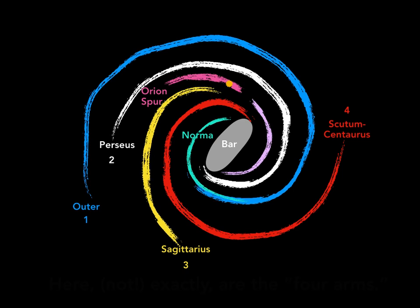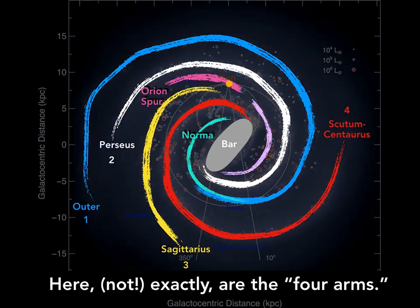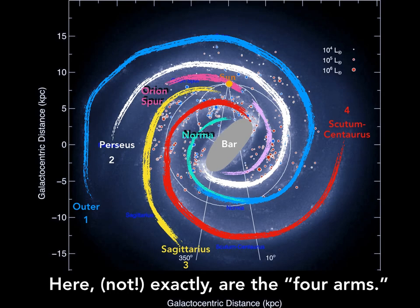So I think that's what these four arms are. Let's just say here in this picture are not exactly four arms, but four arms-ish. So there is your four-arm Milky Way spiral.